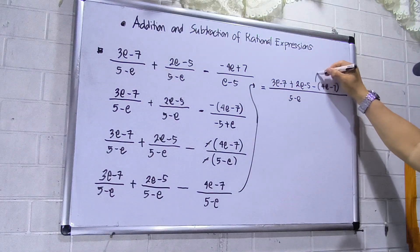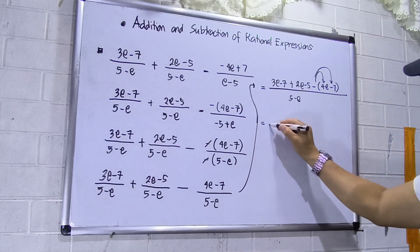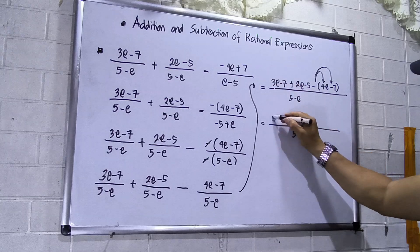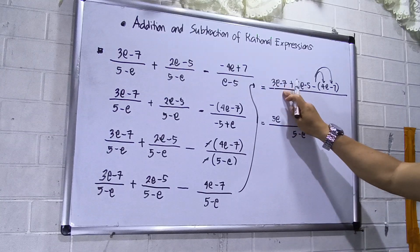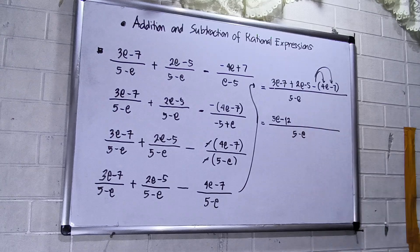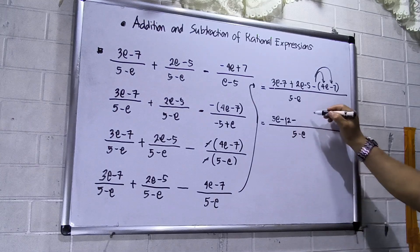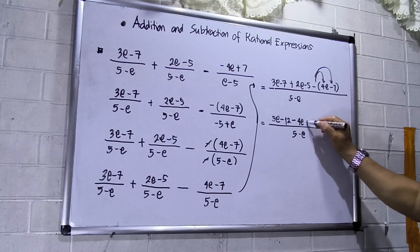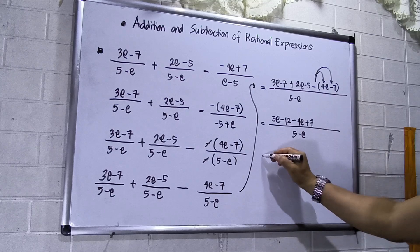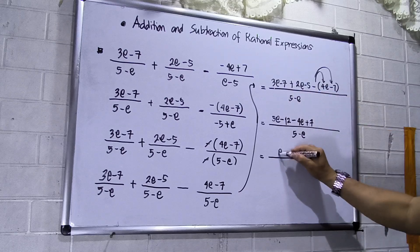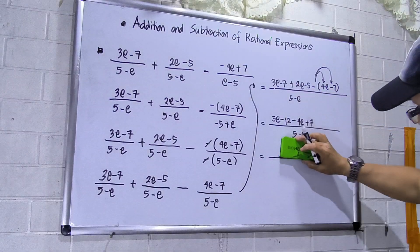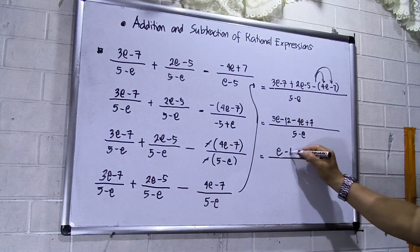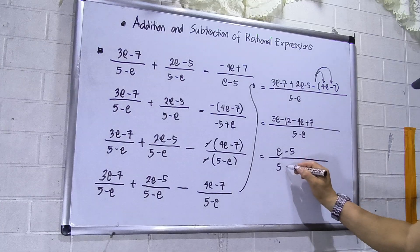Now simplify. Combining first: 5e, then −7 − 5 equals −12. This gives 5e − 12. Then: 4e, positive 7, gives 4e + 7. So 5e − 4e = e, and −12 + 7 = −5. The numerator is e − 5, over the denominator (5 − e).